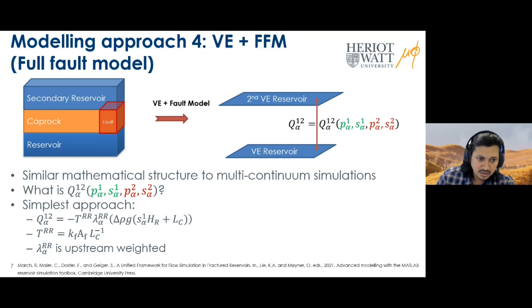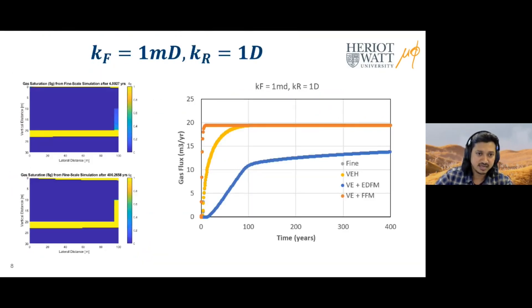Now we compare all four of these approaches with the fine scale simulations. I'll show one result where we've taken the fault permeability to be one millidarcy and reservoir permeability around one darcy. The gray dots are the fine scale simulation and the yellow dots are the vertical equilibrium hybrid approach. You can see the hybrid approach matches the fine scale simulation really well. The goal here is not to match the early time behavior but to match the final steady state flux. The key point is that the full fault model we showed finally was able to match the final steady state flux prediction.